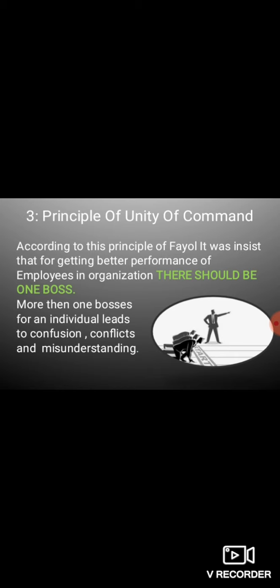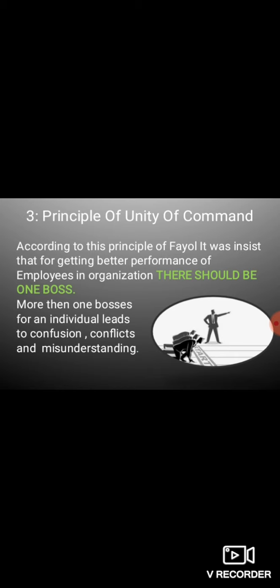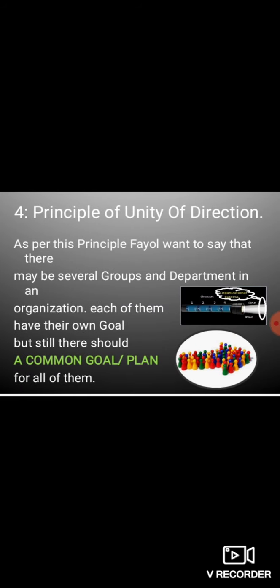बहुत तरह की problems create होती हैं और employees effectively work नहीं कर पाते हैं। Next principle of Fayol is Unity of Direction। इस principle में Fayol ने कहा कि organization का एक common goal होना चाहिए, एक single plan होना चाहिए, उसी plan पर सभी organizational departments को काम करना चाहिए। हालाँकि different departments के अपने particular goals होते हैं but सभी departments को अपने particular goal organizational goal को ध्यान में रखके बनाने चाहिए।